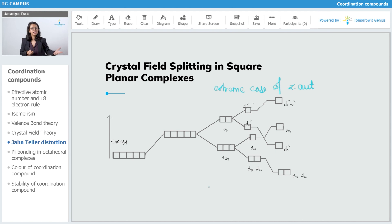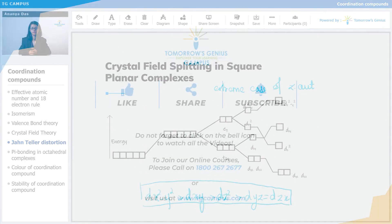So if we compare the energy of the orbitals in your square planar complexes, then the energy of the dx²-y² is greater than the energy of the dxy, which is greater than the energy of dz², which is greater than the energy of dyz, which is equal to the energy of dzx. This is the order of the energy in case of your square planar complexes. And square planar complexes are an extreme case of your z-out distortion.